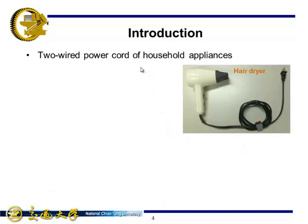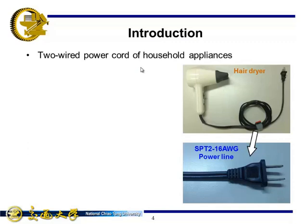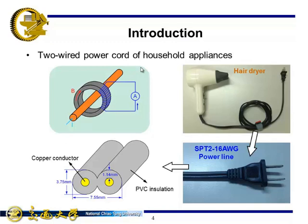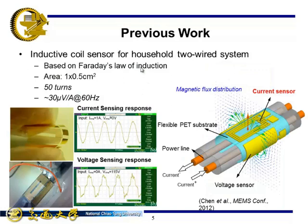Here shows a sample of two-wired power cords of household appliances. Inside the fixture are two coupled conductors with PVC insulation. When the appliance is on, the current flows through one conductor and flows back through the other one. Commercial current sensors like Rogowski or current transformers can only measure a single current carrying conductor, so they cannot be used in these two-wired systems.